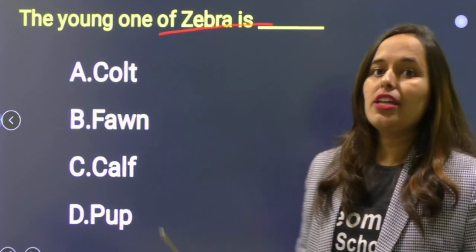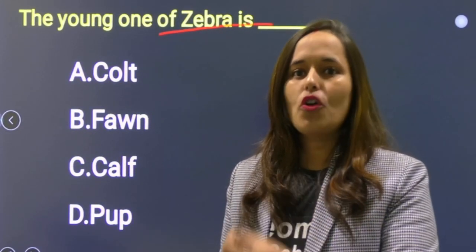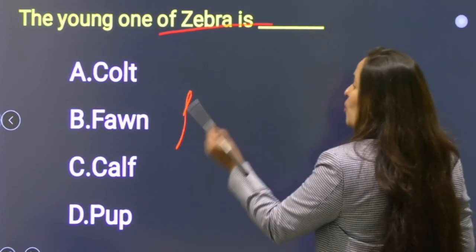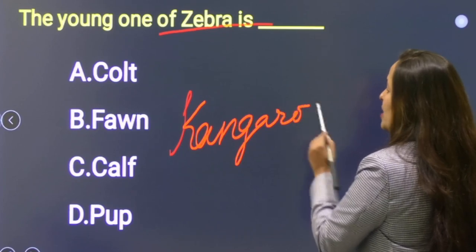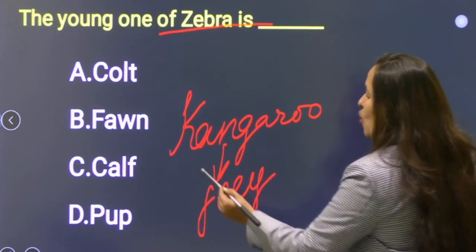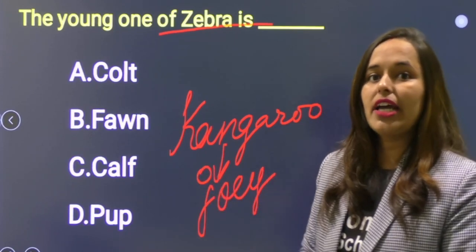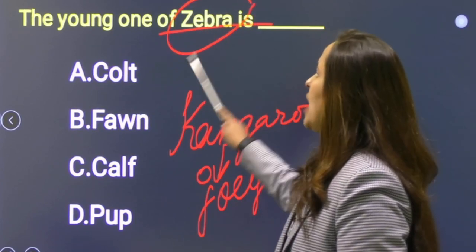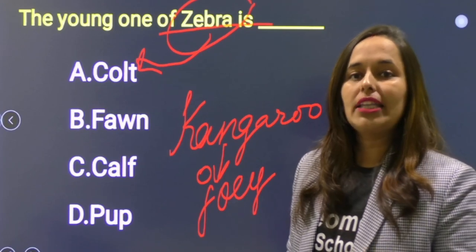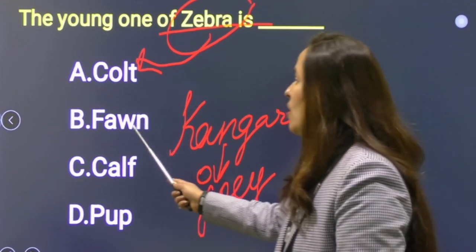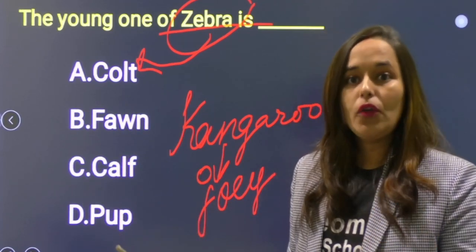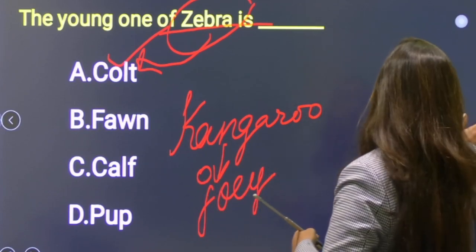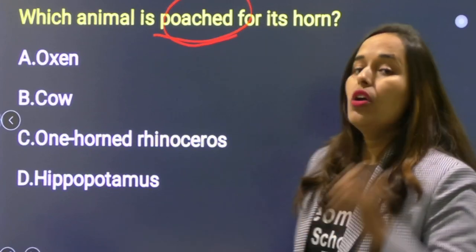Next: Young ones of animals chapter से — different animals के young ones पूछे जाते हैं। Last year कंगारू का young one पूछा था — जो 'joey' कहलाता है। Zebra का young one क्या कहलाता है? Horse के baby को colt कहते हैं, female young one को filly। Deer का baby calf, elephant का baby calf, dog के baby को pup कहते हैं। Zebra के लिए correct option is colt.